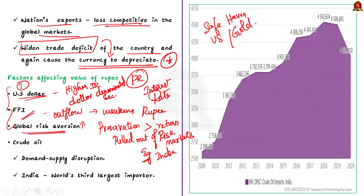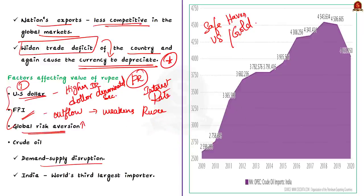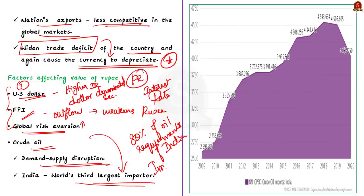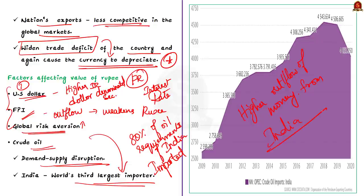Another major factor influencing the value of the rupee is crude oil. An increase in crude oil prices due to demand-supply disruption was also cited as an important reason for the fall in the rupee. The crude has traditionally been a big determinant of the way the rupee moves. This is because India is the world's third largest importer and consumer of crude oil — India imports almost 80% of its oil requirements. Look at this graph to understand how far India is importing crude oil. Thus, it leads to higher outflow of money from India, causing depreciation of the rupee because money supply in India decreases, leading to the same vicious cycle discussed earlier.